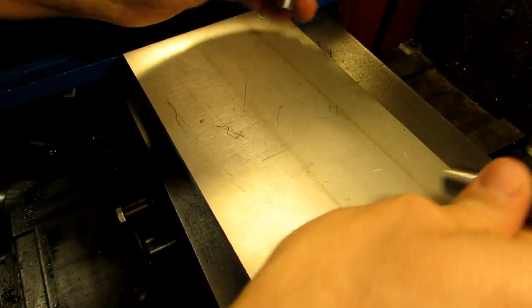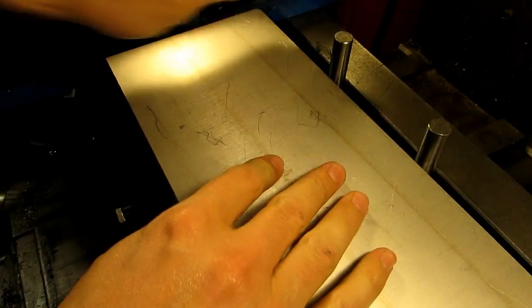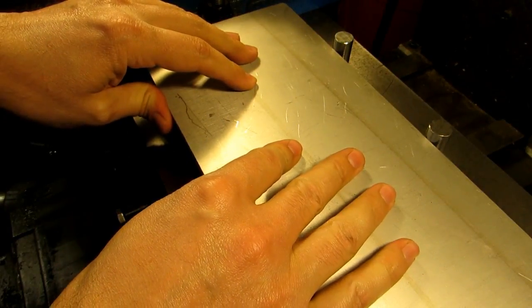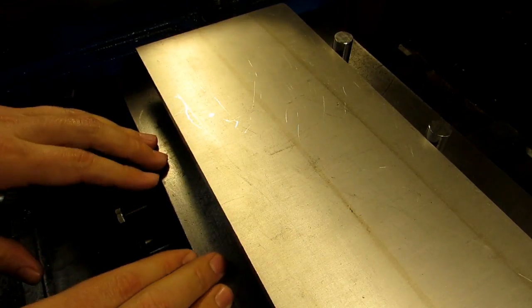So instead, make yourself some pins that fit in the T-slots of the machine, and then bump your part up against it. This makes your part square to the T-slot, and therefore square to the travel of the table.